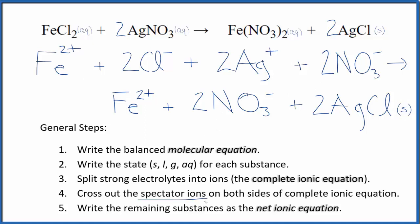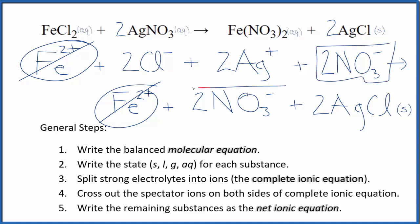Now, we cross out the spectator ions. They're on both sides. I can see in the reactants here, I have this iron(II) chloride. Cross that out because I have it in the products. I have two nitrate ions here in the reactants and in the products. Those are spectator ions. I cross those out.